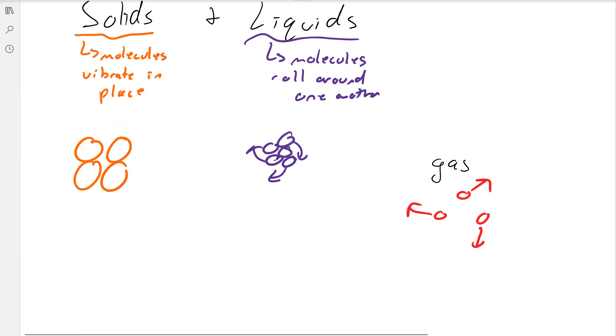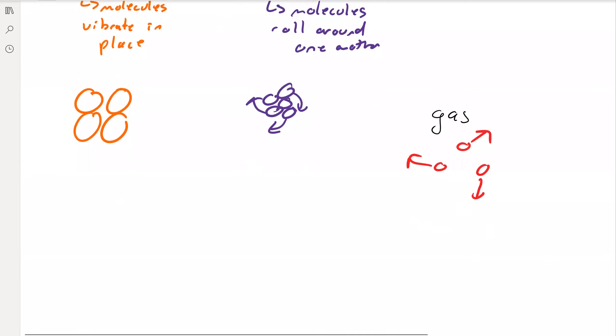While every now and then they do come in collision with one another, most of the time they're by themselves. So the main difference between solids and liquids and gases is that solids and liquids, our particles stay together.